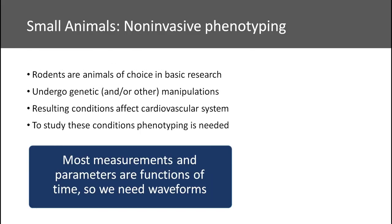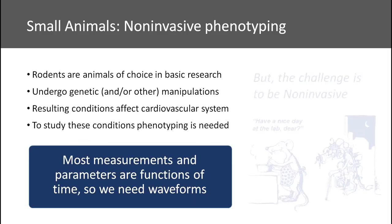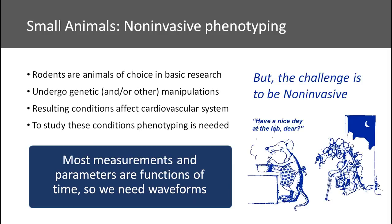Rodents are the animals of choice in basic research. These animals, specifically mice, undergo genetic and other manipulations — like surgical manipulations — that may alter their cardiovascular function. To study the resulting conditions, we need phenotyping. Since most cardiovascular measurements and parameters are functions of time, we need waveforms. The challenge is to be non-invasive so that we can do longitudinal studies in these animals.